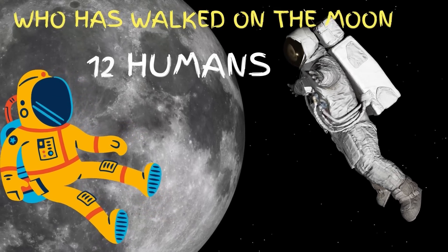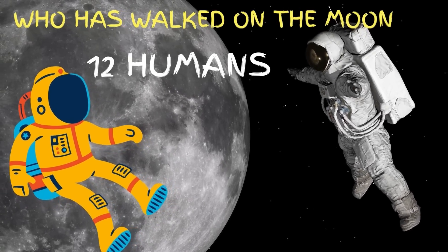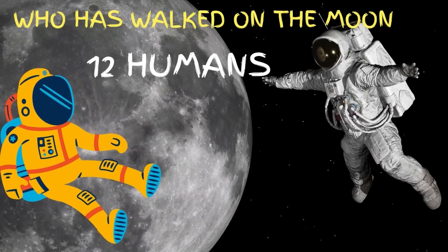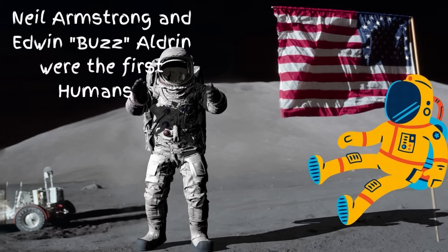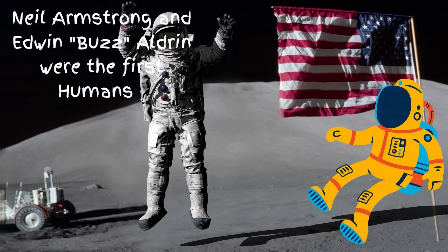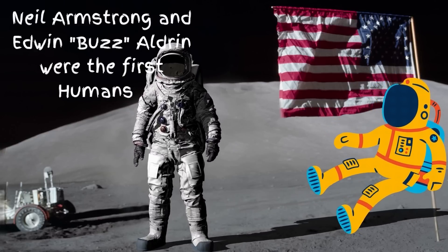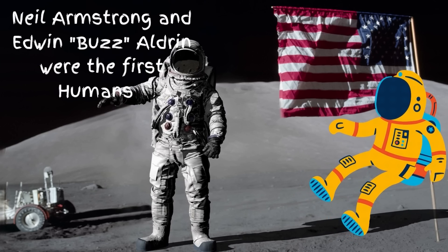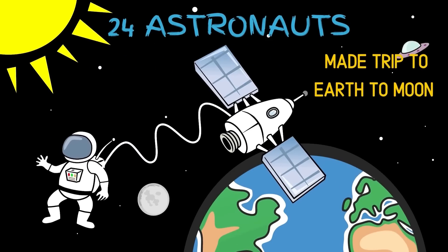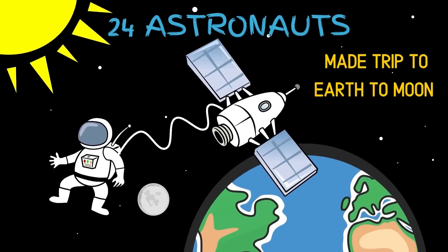So who has walked on the moon? 12 humans have ever walked on the moon. Hello, fellow astronaut. American astronauts Neil Armstrong and Edwin Buzz Aldrin were the first humans. 24 total astronauts made trips from Earth to the moon.